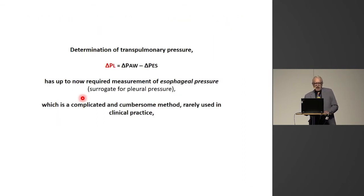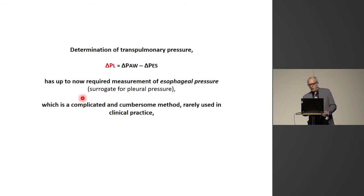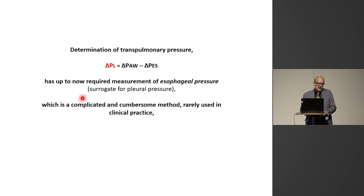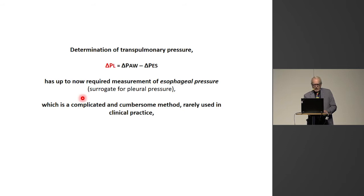Up to now, determination of transpulmonary pressure requires the use of the esophageal catheter. This is a catheter that is both complicated and cumbersome to use, and it is rarely used in clinical practice. So we started looking at other ways of separating lung and chest wall mechanics.